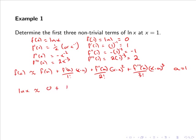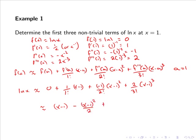So ln of x is approximately f of 1, which is 0, plus f dash of 1 — which is 1 — times x minus 1, minus 1 over 2 factorial times x minus 1 squared, plus 2 over 3 factorial times x minus 1 cubed. Since 2 factorial equals 2, 3 factorial equals 6, and 2 over 6 equals 1 over 3, this simplifies to x minus 1, minus one half times x minus 1 squared, plus one third times x minus 1 cubed.